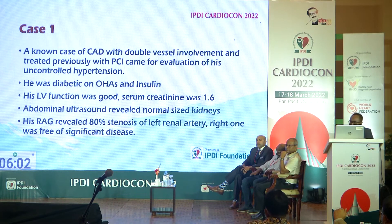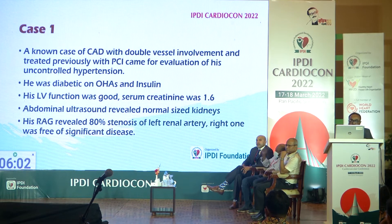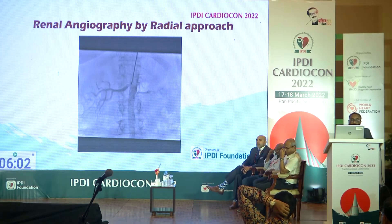Now let's come to our cases. Case 1: a known case of coronary artery disease with double vessel involvement, previously treated with PCI, who came for evaluation of uncontrolled hypertension. He was diabetic on drugs and insulin. His LV function was good, serum creatinine was 1.6, and abdominal ultrasound revealed normal renal sizes. Renal angiogram revealed 80% stenosis of the left renal artery; the right was free of significant disease.